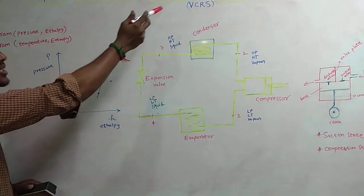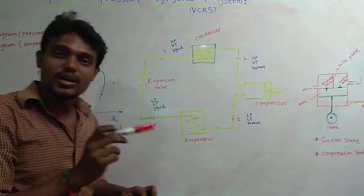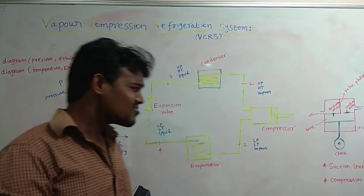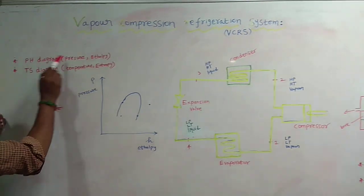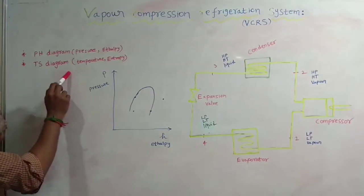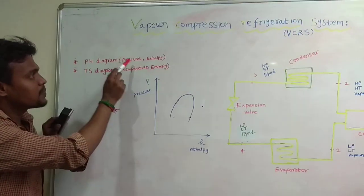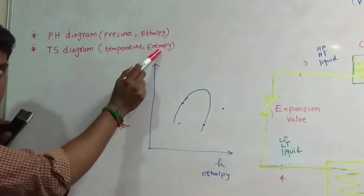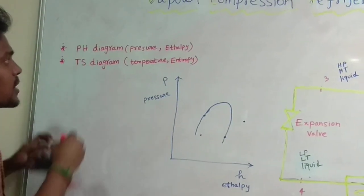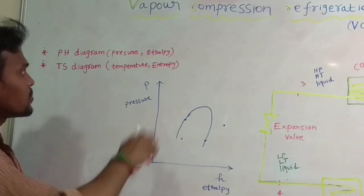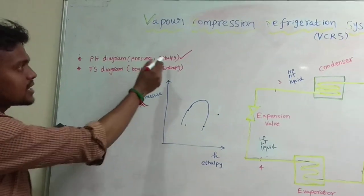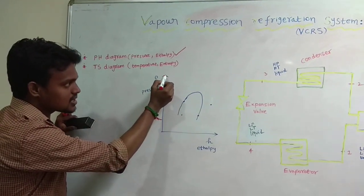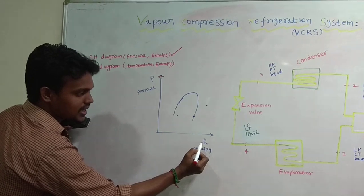Now let's explain the two diagrams: the pH diagram and the Ts diagram. The pH diagram is Pressure vs Enthalpy. The Ts diagram is Temperature vs Entropy.